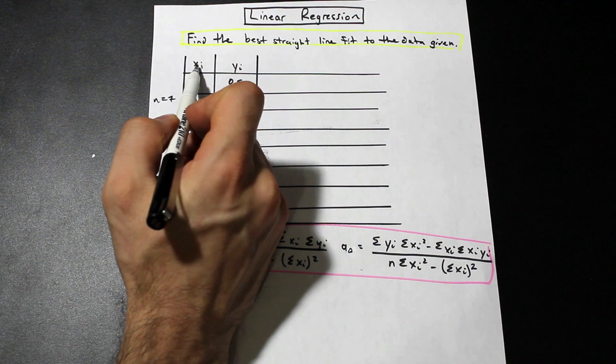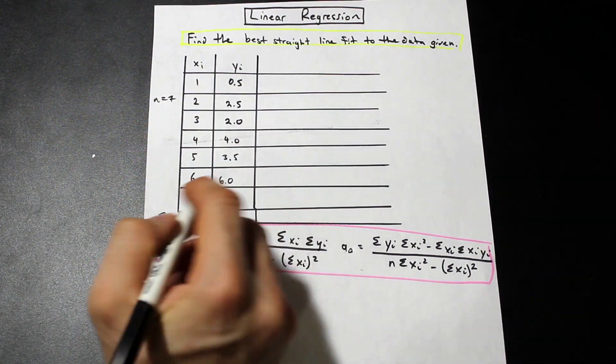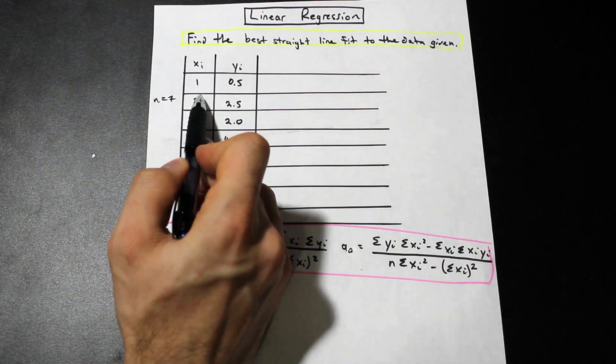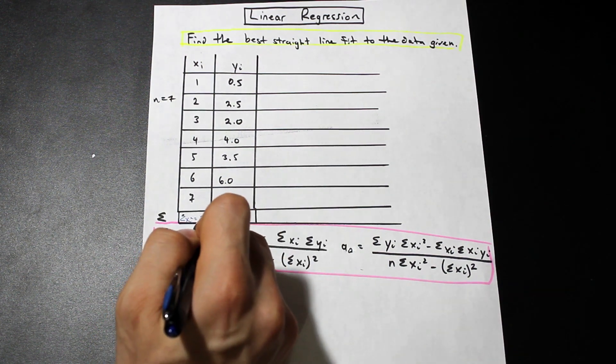Those are the summation of these two columns here we're going to need. On the bottom row here, let's just write those in. We have the summation of xi, and that's 1 plus 2 plus 3 plus 4 plus 5 plus 6 plus 7, so that's 28.